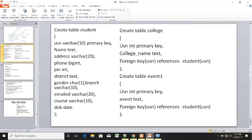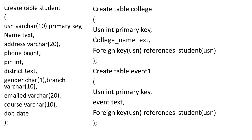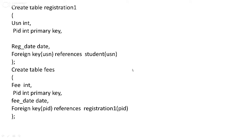Next we'll see the database creation. This is the code to create the table. We use CREATE TABLE followed by the table name, for example 'student'. Inside the brackets we give all the attributes along with their data types. For example, USN is an attribute of student — USN along with its data type VARCHAR is mentioned, and USN is considered the primary key, so we specify PRIMARY KEY before the attribute name. In the same way we created tables for college, event, registration, and fees.